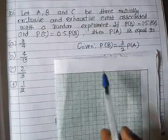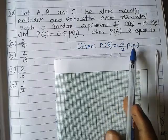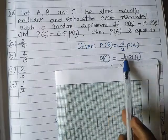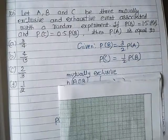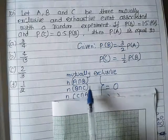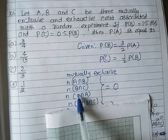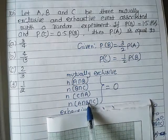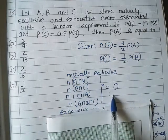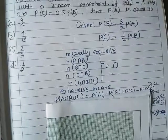Given: P(B) = 3/2 P(A) and P(C) = 1/2 P(B). Mutually exclusive means what happens? There are no two events together, so P(A intersection B), or B intersection C, or C intersection A, or A intersection B intersection C all equal zero.